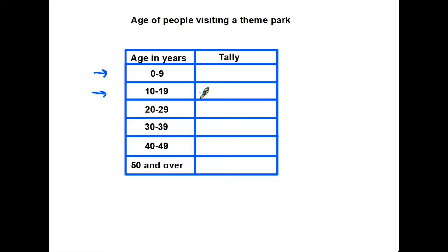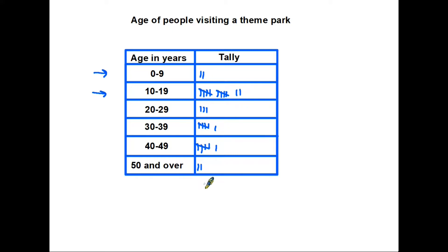Once we have our table all set up it becomes quite straightforward, because all we are going to do is record each person's age as they come through and put them in the appropriate age group. So if the first couple of people are maybe 12 year olds, and they're with a couple of people in their 40s, then some young kids with their parents, then a group of teenagers, some people in their 20s, and a couple over 50 — we are simply building up a picture of the ages of people sorted into the appropriate groups by using a tally chart.